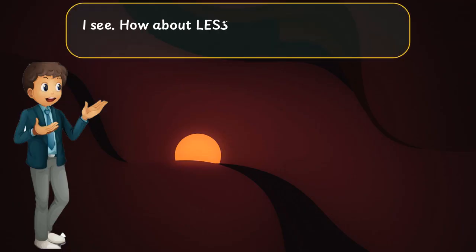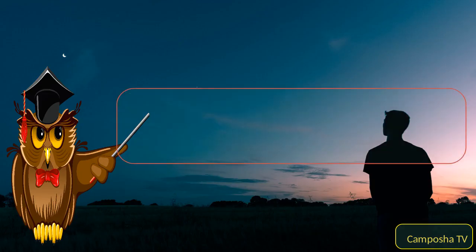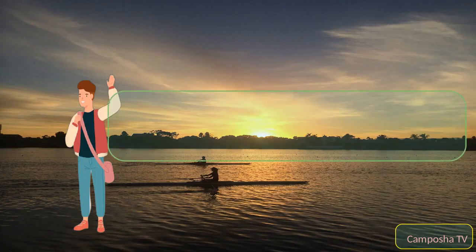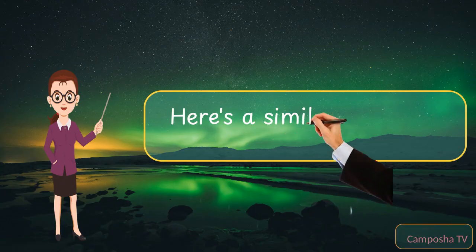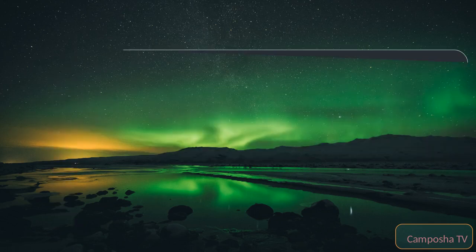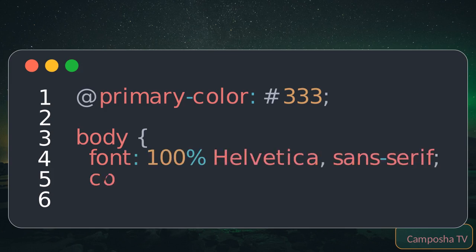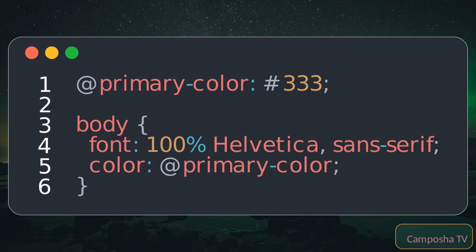I see. How about LESS? How does it differ from SASS? LESS is similar to SASS in many ways — it also supports variables, mixins, functions, and nesting. However, its syntax is closer to CSS. Here's a similar example in LESS. The key difference is the syntax: LESS maintains a more CSS-like syntax with semicolons and curly braces, which some developers find easier to grasp.